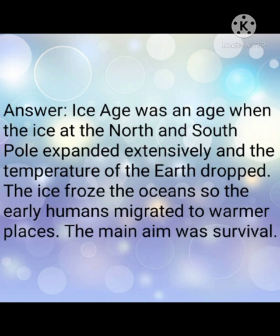The answer is: Ice Age was an age when the ice at the north and south poles expanded extensively and the temperature of the earth dropped. The ice froze the oceans, so the early humans migrated to warmer places. The main motive was survival — this is how migrations started.